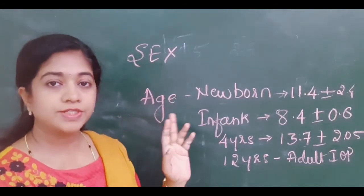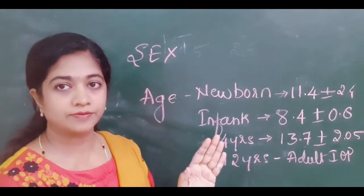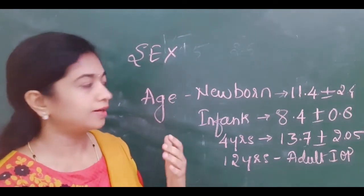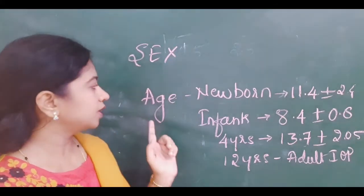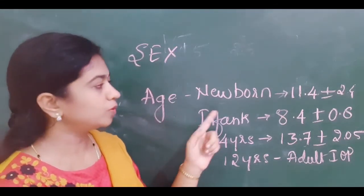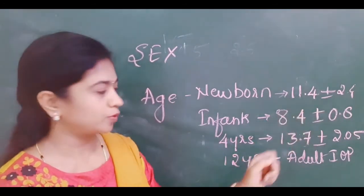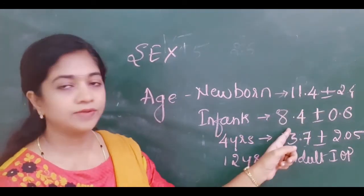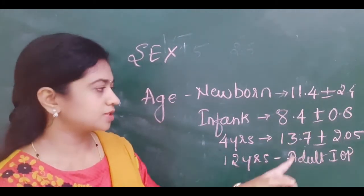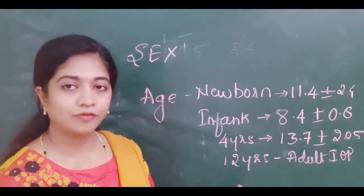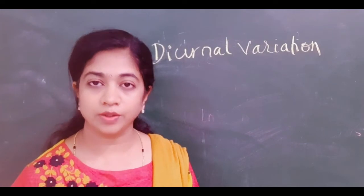Coming to the physiological factors which influence intraocular pressure: considering sex, up till 40 years of age there is no predilection to male or female. After 40 years, increase in IOP is more common in women. When considering age, newborns have IOP in the range of 11.4 ± 2.4, infants in the range of 8.4 ± 0.8, up to 4 years it is about 13.7, and after 12 years it becomes similar to adults.